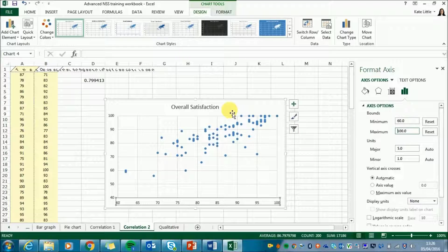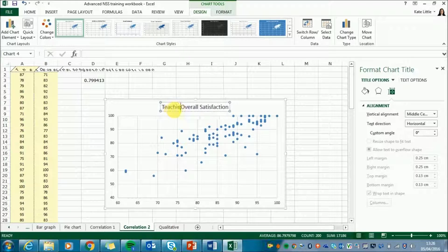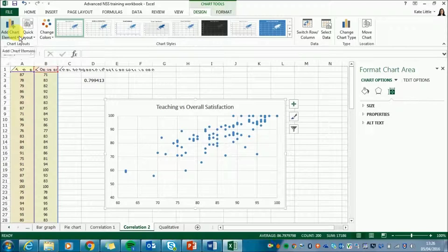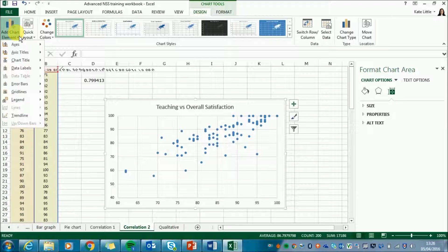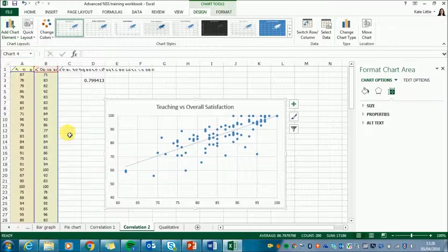So the next thing I'm going to do is I'm going to change the title. So it's teaching versus overall satisfaction. I'm going to add in a trend line so that you can really see this quite strong correlation. So I'll go over to add chart element on the left down to trend line and we want a linear trend line.